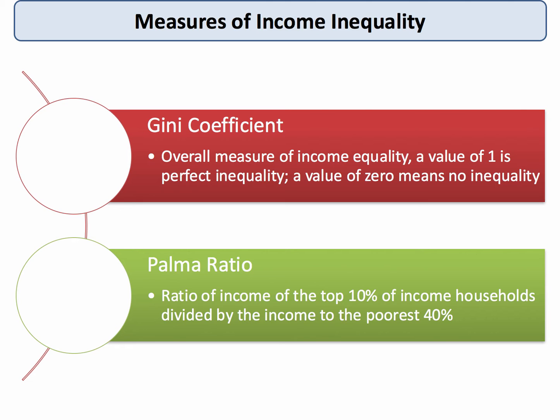The Gini coefficient is perhaps the best known measure of income inequality. It's an overall measure which has a value either of one, which means perfect inequality, or zero, where there's no inequality. Clearly in the world today, all countries have a Gini somewhere in between.